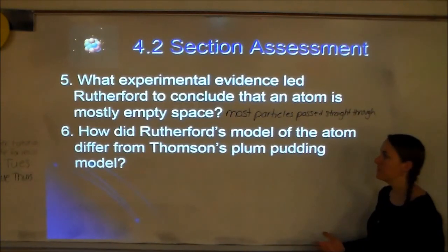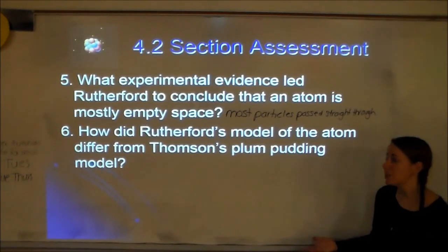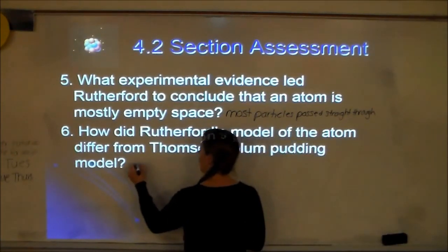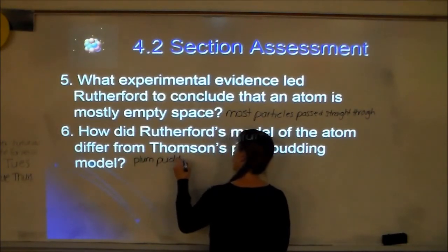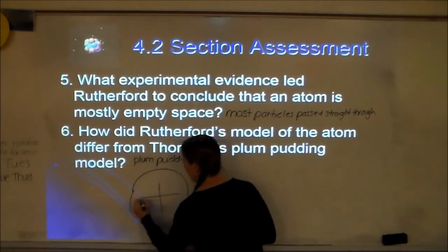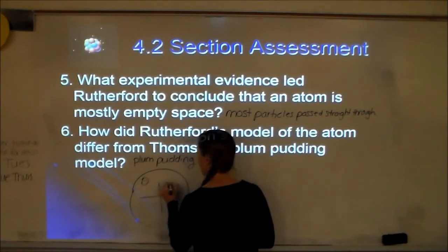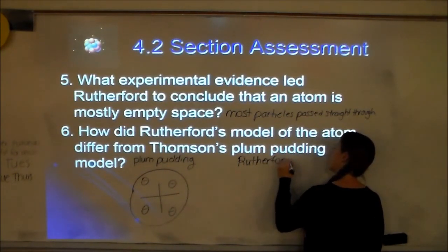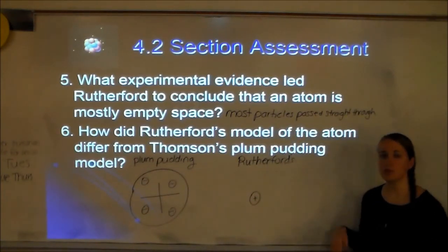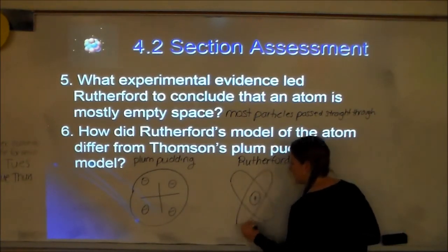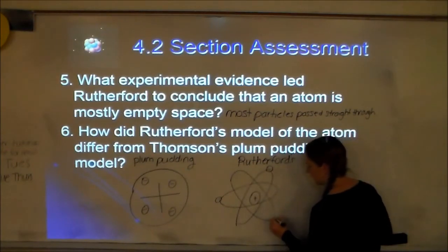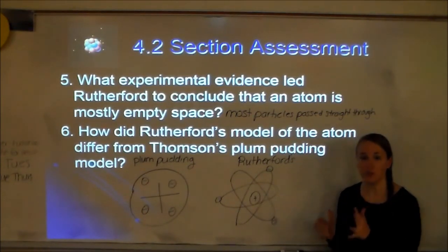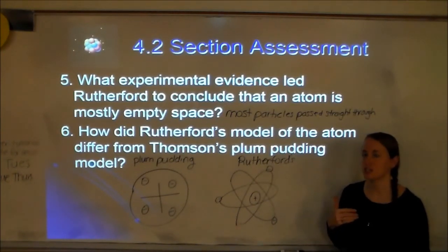How did Rutherford's model differ from Thomson's plum pudding model? Thomson's plum pudding model — like a chocolate chip cookie — has a big positive area acting like a force field with electrons dispersed throughout. Rutherford's model has a positive nucleus in the center containing the protons and neutrons, with the electrons somewhere outside the nucleus. Rutherford wasn't sure exactly where the electrons were — just that they were outside the nucleus. Our next couple of models will focus on figuring out exactly where the electrons are.